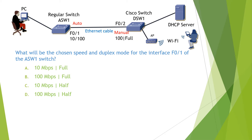Now looking at switch ASW1, it is a regular switch, which means it is not a Cisco switch, so it has to follow the IEEE rules. In this case, it will choose the slowest speed of 10 Mbps, and because the chosen speed is 10 Mbps, it will choose the half-duplex mode. Therefore, the answer to this question is C.